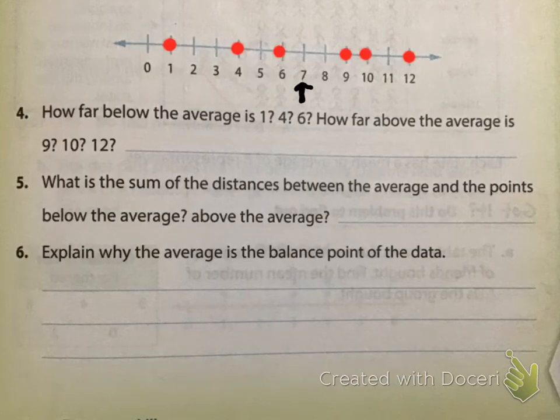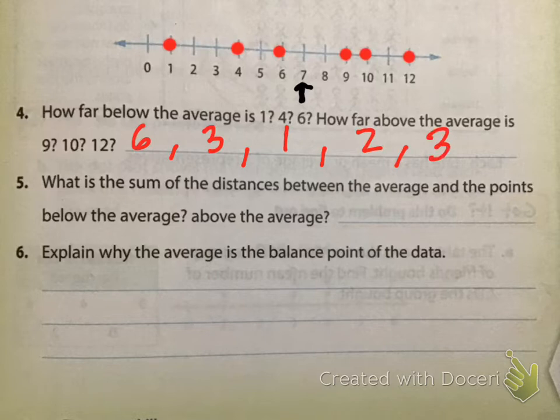Then, how far below the average is one? It is six below. Is four? It is three below. Six is one below. Above the average? Here, it's two above. Above it here, it's three above. And above it here, it's five above.